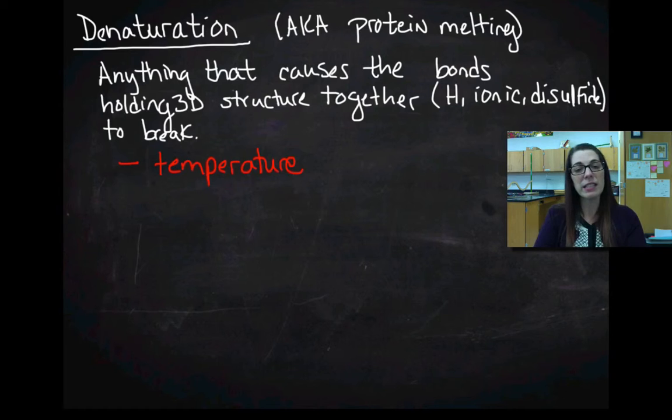Obviously the easiest example of this is temperature. If I heat a protein up high enough, it's going to cause the bonds, the hydrogen bonds, between the different sections of your polypeptide to break. The hydrogen bonds break and then that causes the protein to unfold some or fold up differently. And so I've denatured my protein.